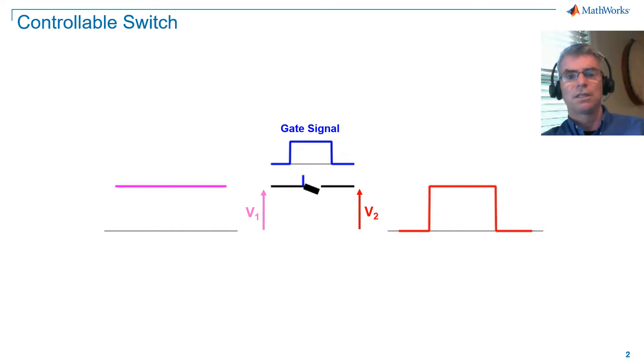Typically, a positive gate signal will turn the device on, and setting the gate signal to zero will turn the device off. In practice, ideal switches do not exist, and switches such as IGBTs and MOSFETs are used. But for the purpose of this tutorial, we'll assume we have ideal switches.